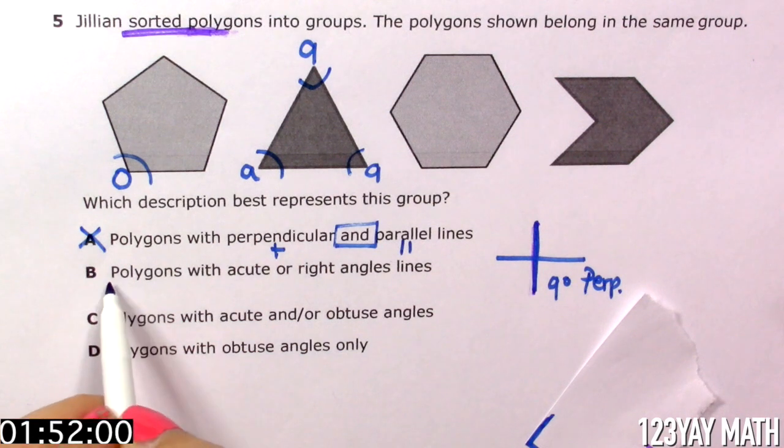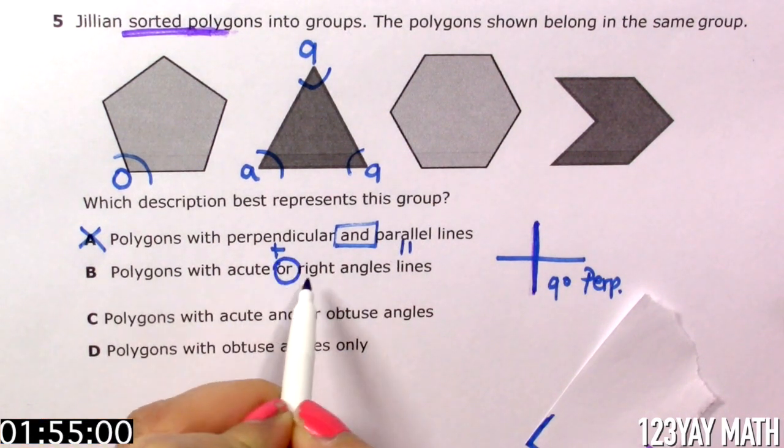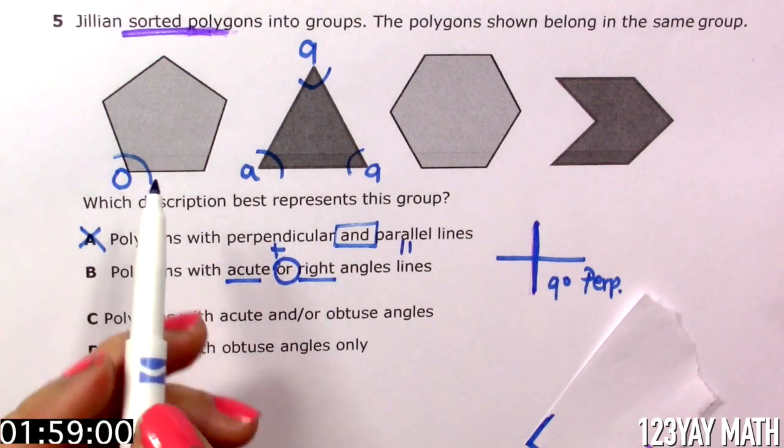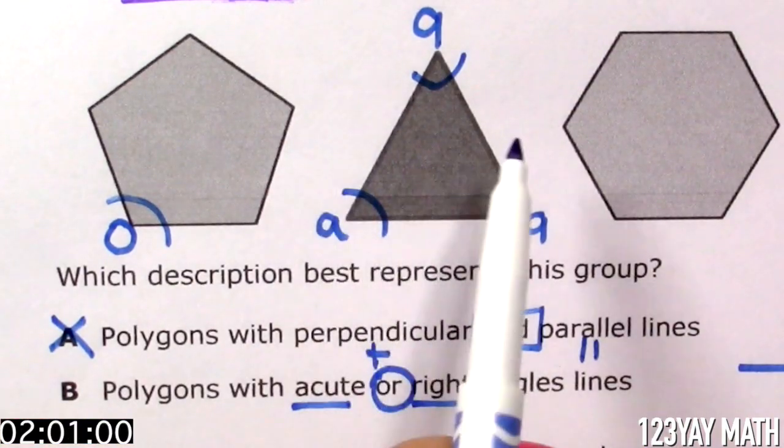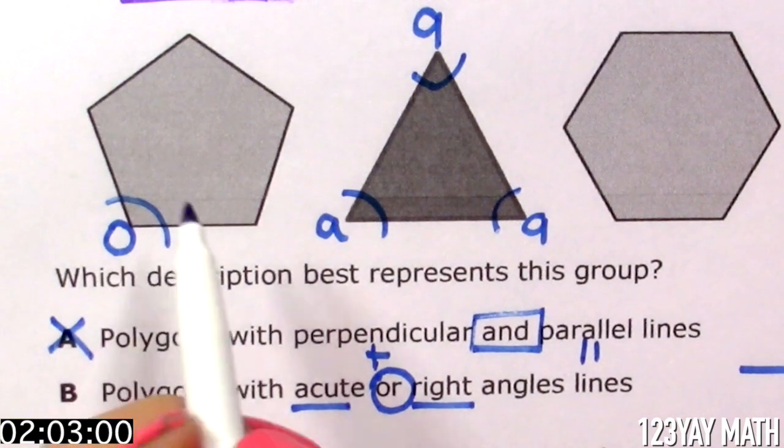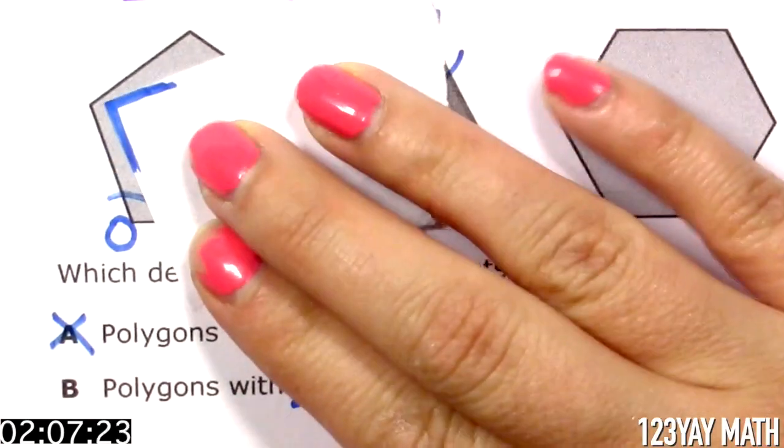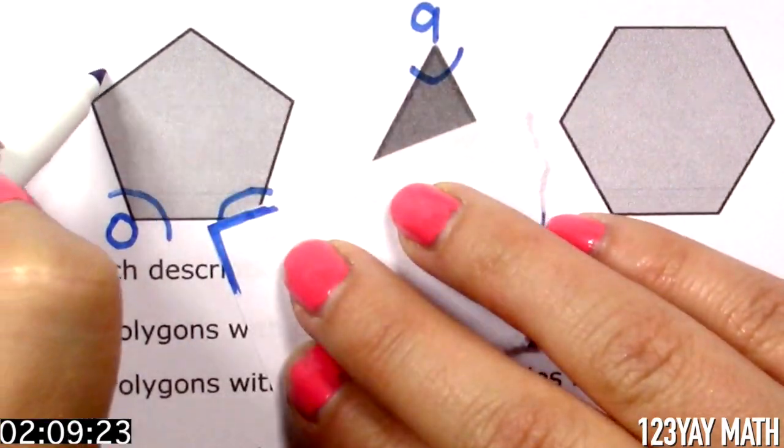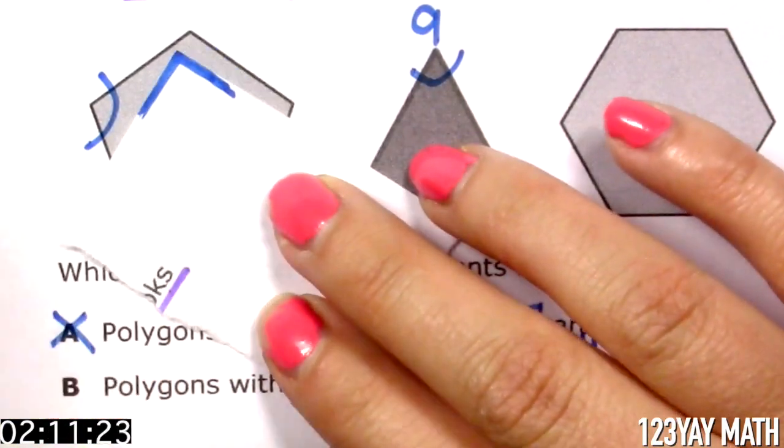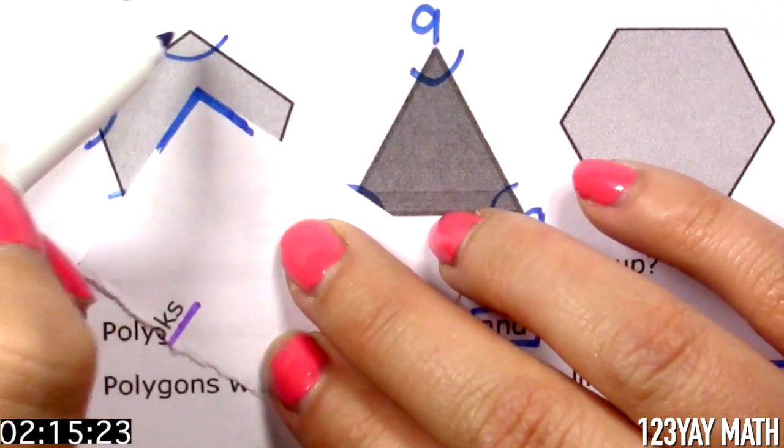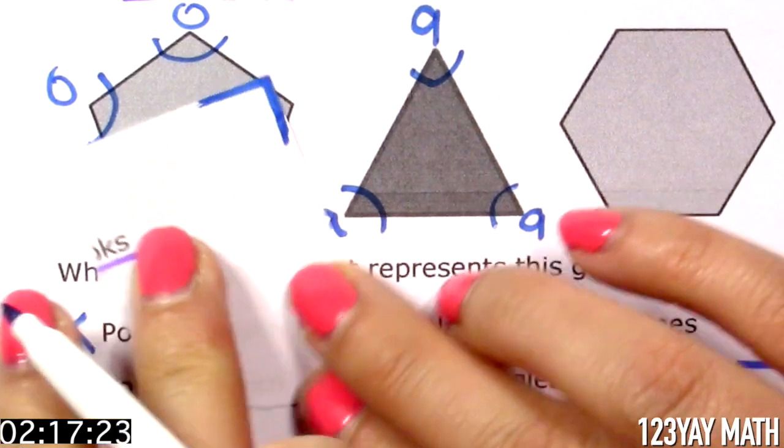What about B? Polygons with acute or right angles. So we're looking for acute or right angles. So this is acute. This is good. Obtuse. Let's do the other one. Obtuse. Definitely obtuse. Rotate the paper. Vertex with vertex. Line with line. Obtuse angle.